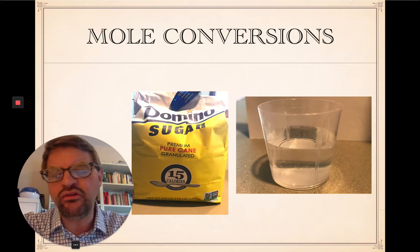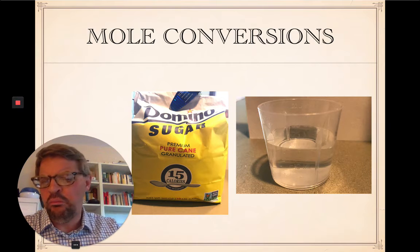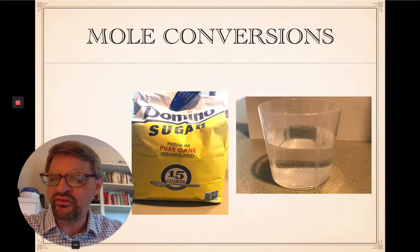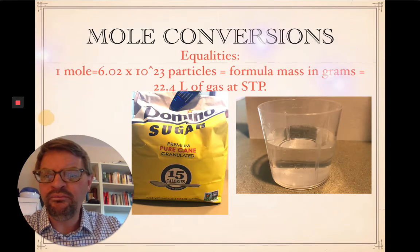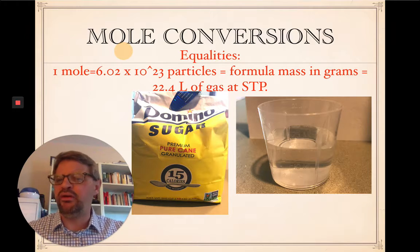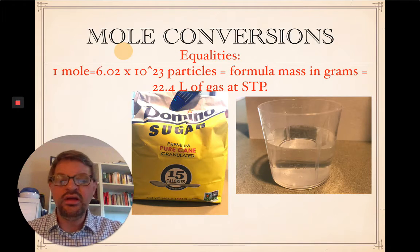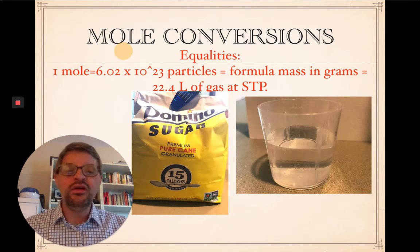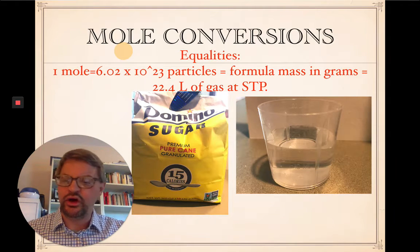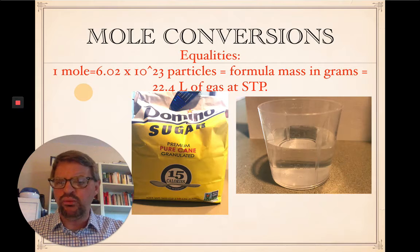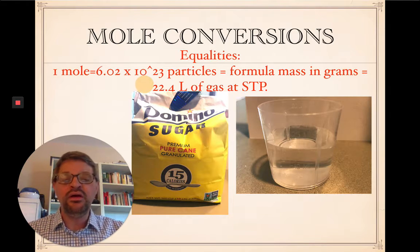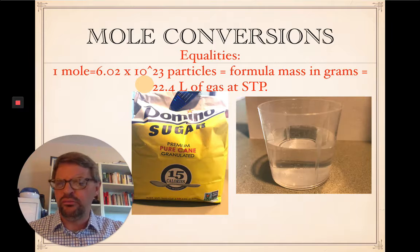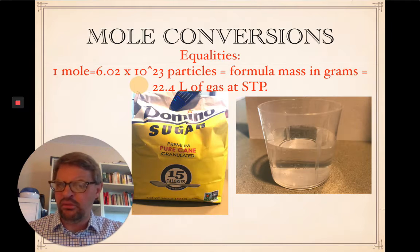The next piece is to take a look at what are called mole conversions and the mole itself. The mole is a way of measuring mass by the number of particles present, whether they're atoms or molecules or formula units with an ionic compound. One mole equals 6.02 times 10 to the 23rd particles. That's Avogadro's number.